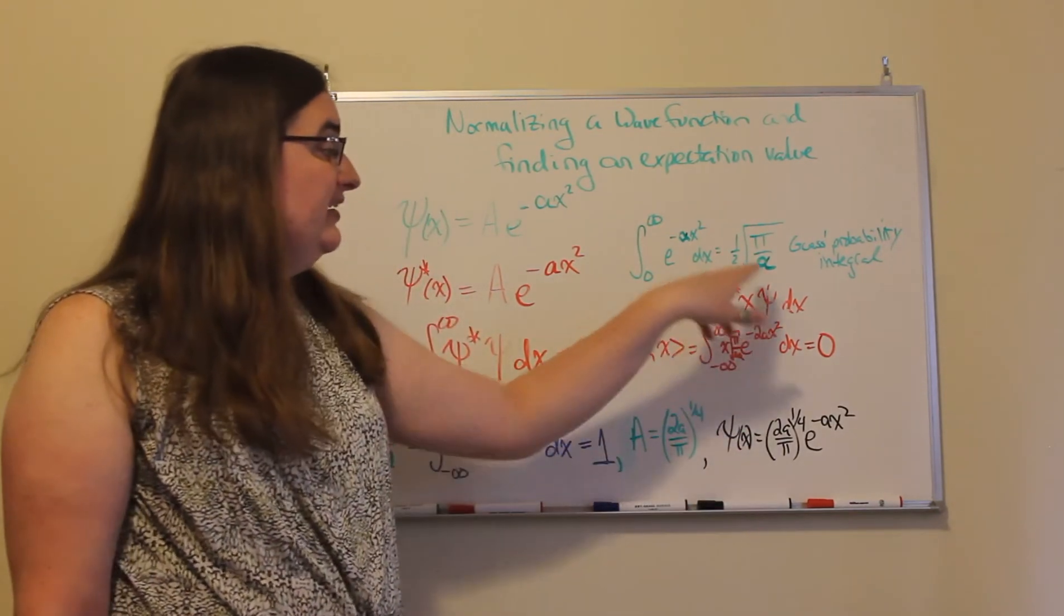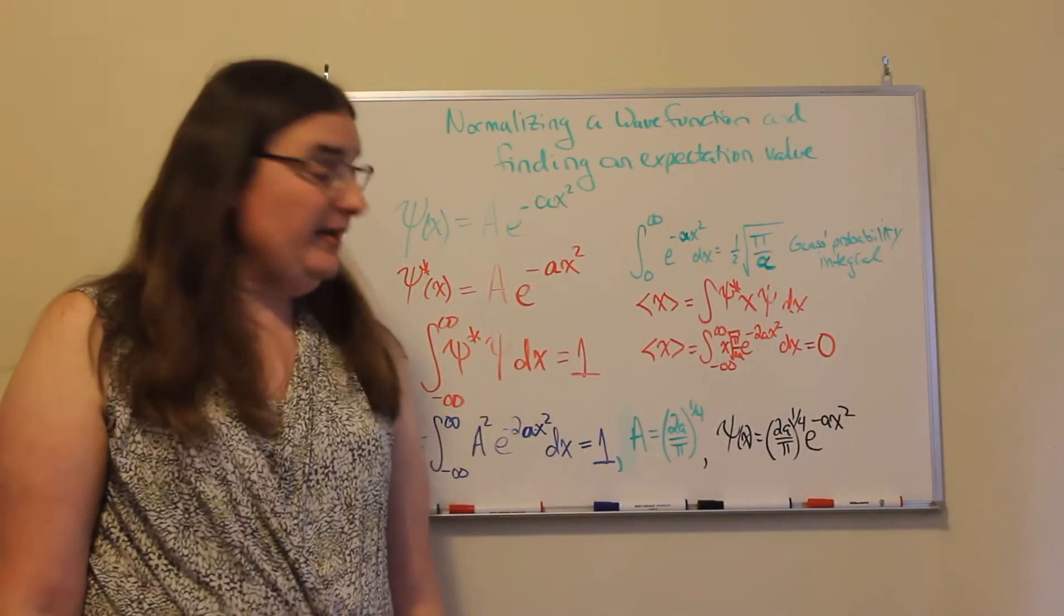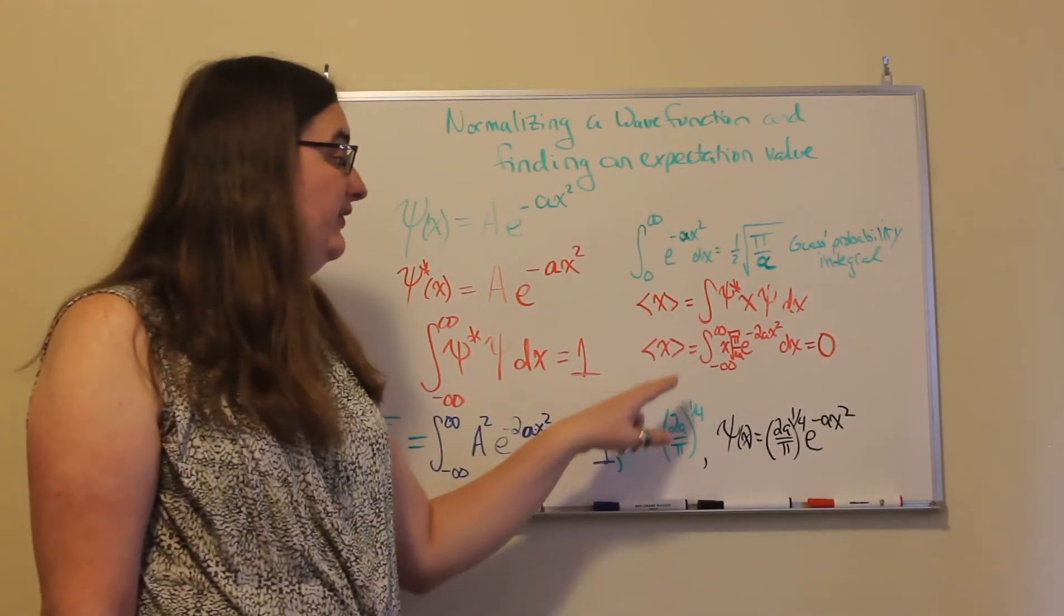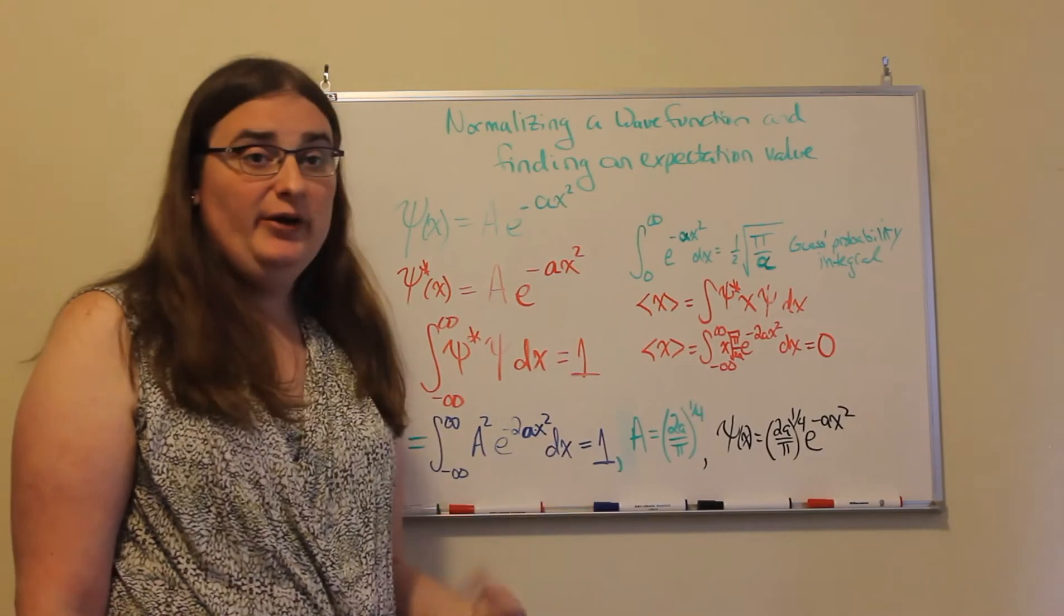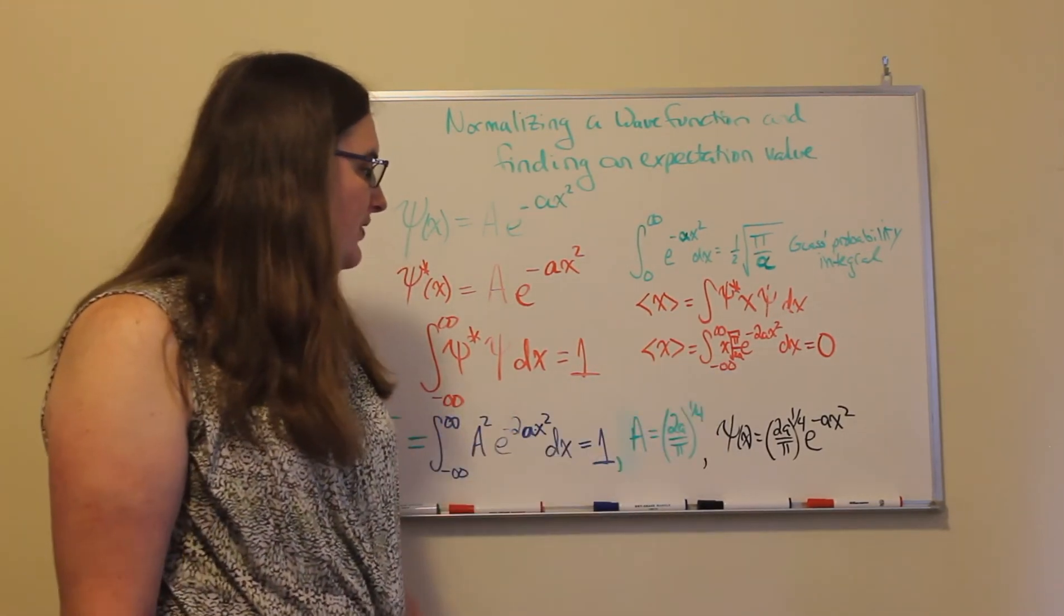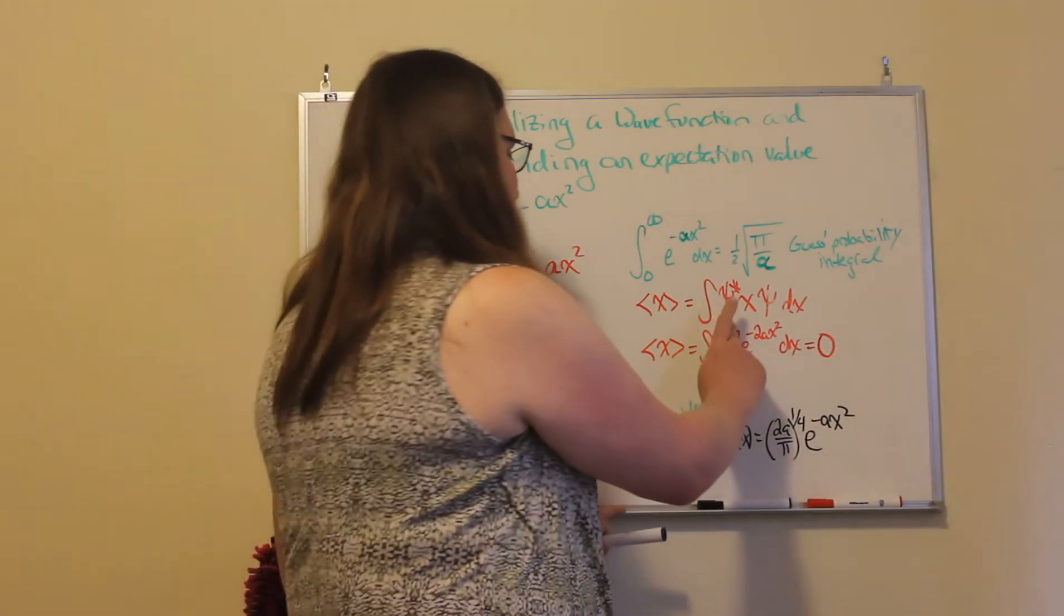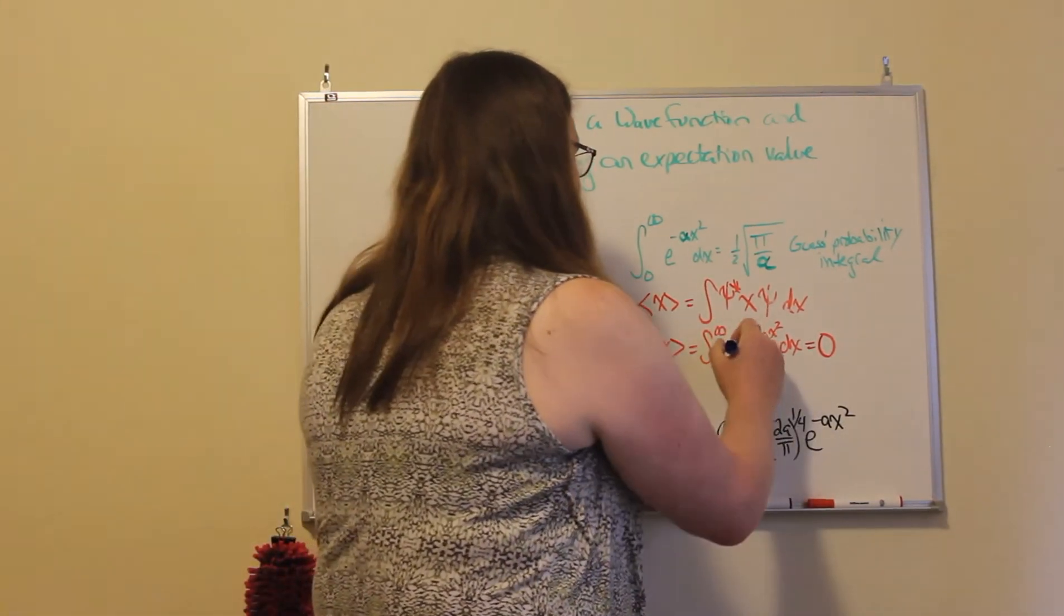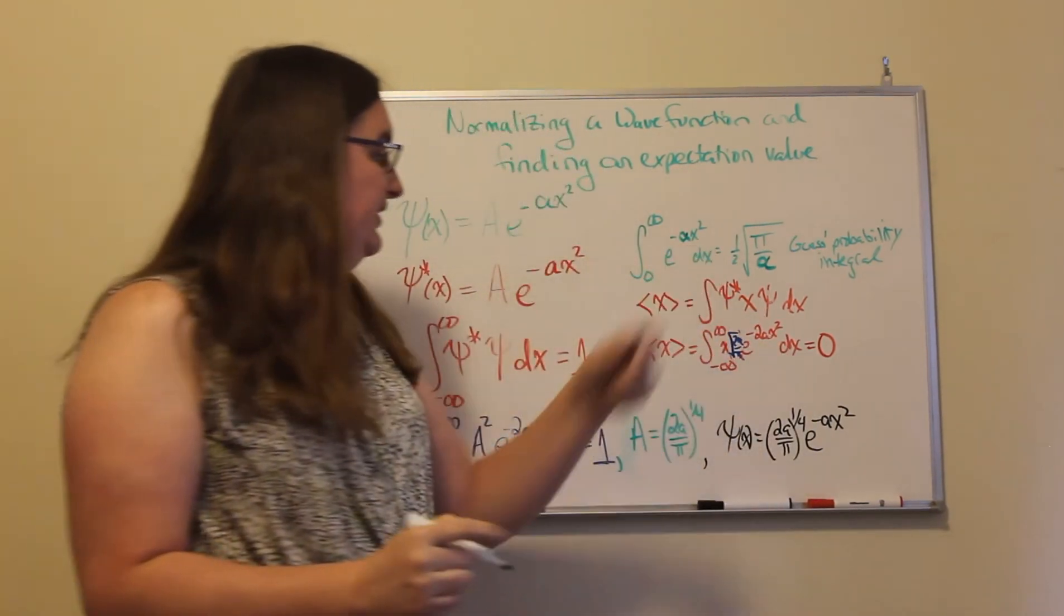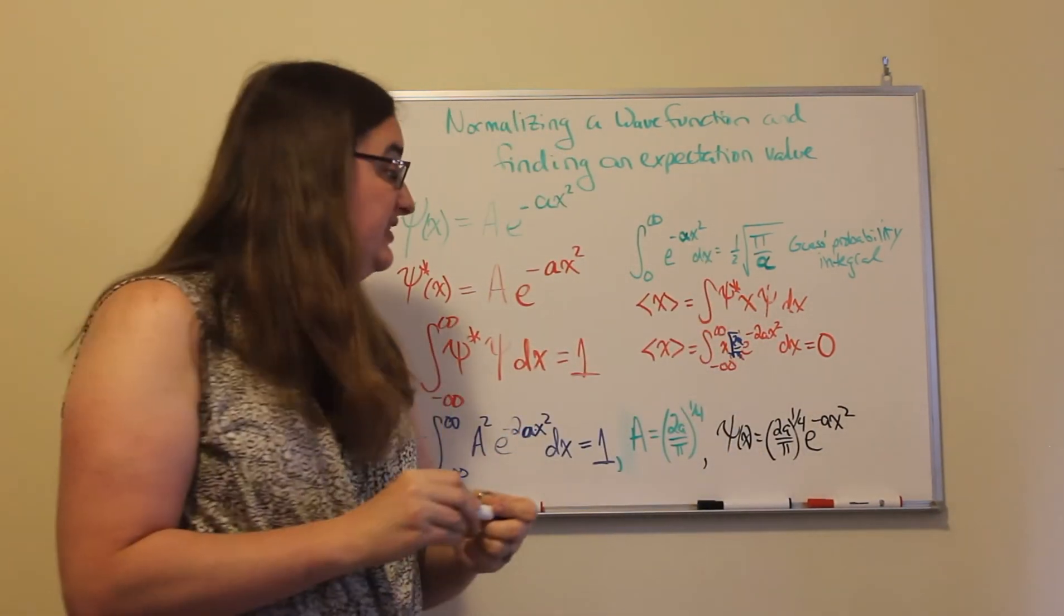Now, because this has no complex dependence, I could just rewrite things and I would end up with x times a squared, which would give me the square root of 2a over pi, e to the minus 2ax squared dx.